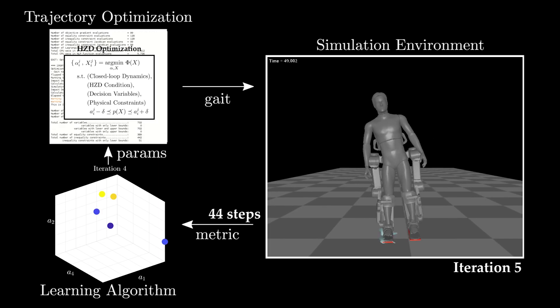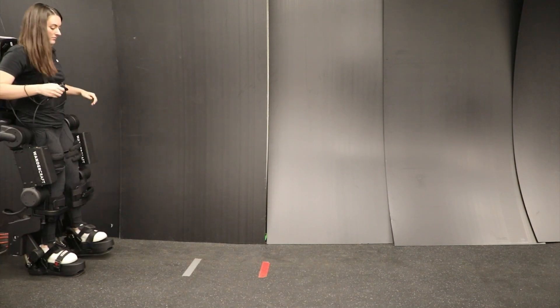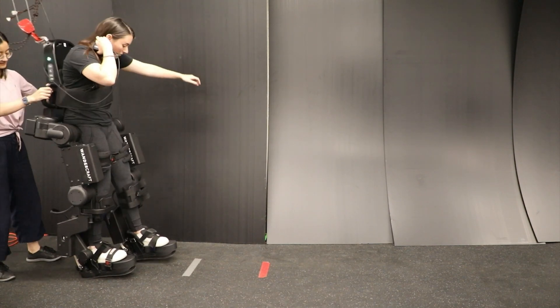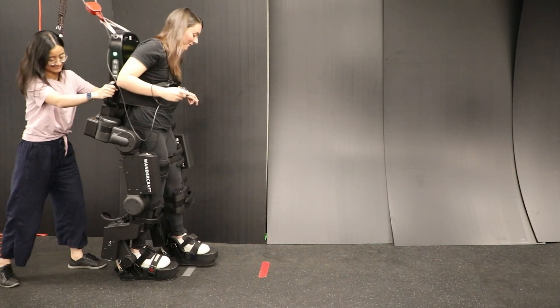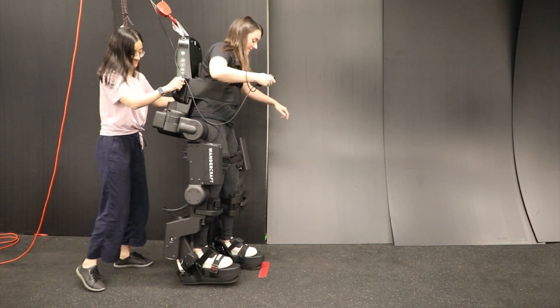However, such stability metrics often fail to successfully translate to stable walking in practice due to real-world factors such as model uncertainty, uneven terrain, and imperfect state estimation.